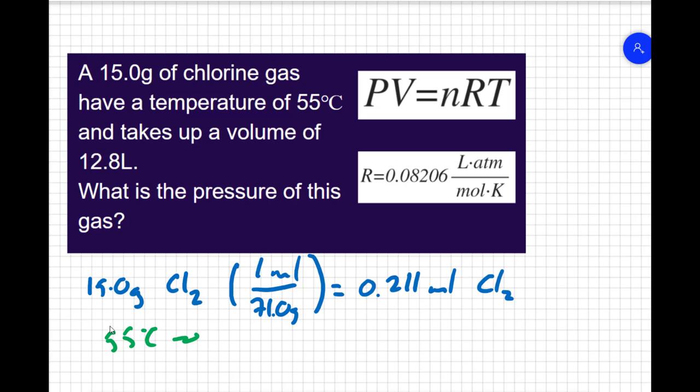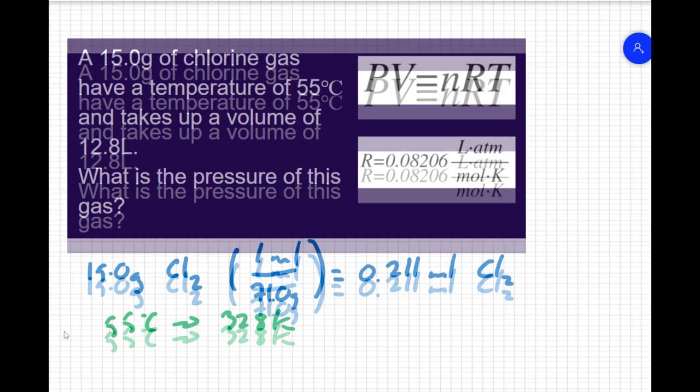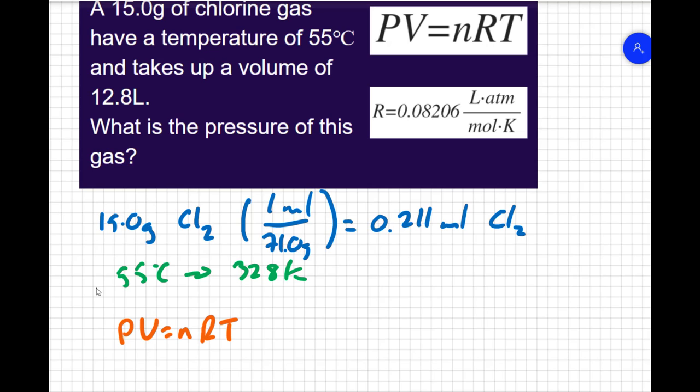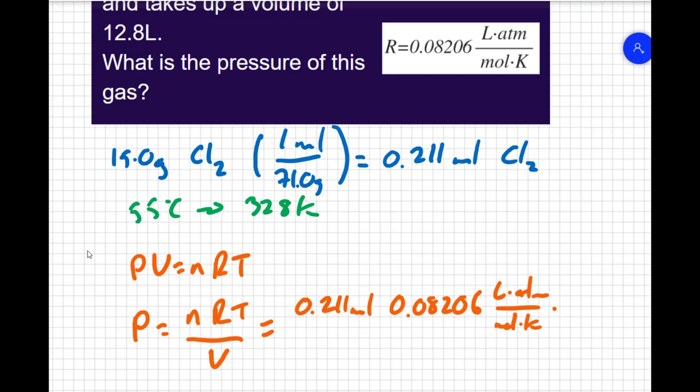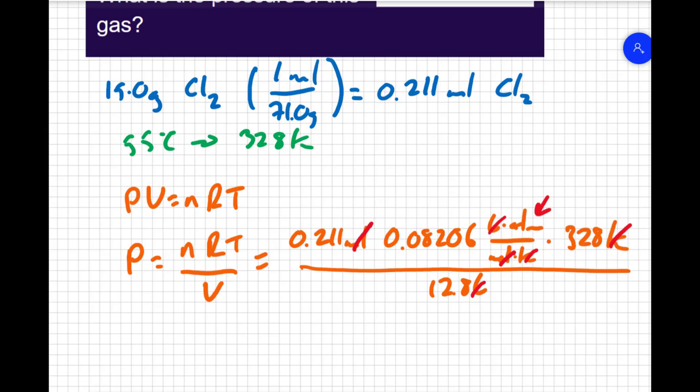So my 55 degrees Celsius needs to be converted to 328 Kelvin. So now I can use the ideal gas law. PV equals nRT. So I'm solving for pressure. So I can say my pressure is going to equal nRT over V. Now I just can plug in my numbers. My moles are 0.211 moles. My ideal gas constant is 0.08206 liters times atmospheres over moles times Kelvin. And my temperature in the correct units is 328 Kelvin. And I'm going to divide that whole thing by my volume, which is 12.8 liters. I can check with my units. My moles cancel out. My Kelvin cancel out. My liters cancel out. And I'm left with atmospheres, which is an appropriate unit for pressure. I plug all of that into my calculator. And I get a pressure of 0.444 atmospheres.